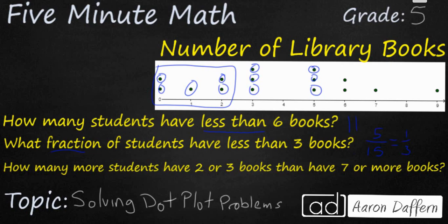Finally, how many more? So we have another subtraction problem. Students have two or three books. One, two, three, four, five. And seven or more books. One, two. So we have five minus two. And that is going to get us a total of three. So that is how you can use a dot plot to answer questions.